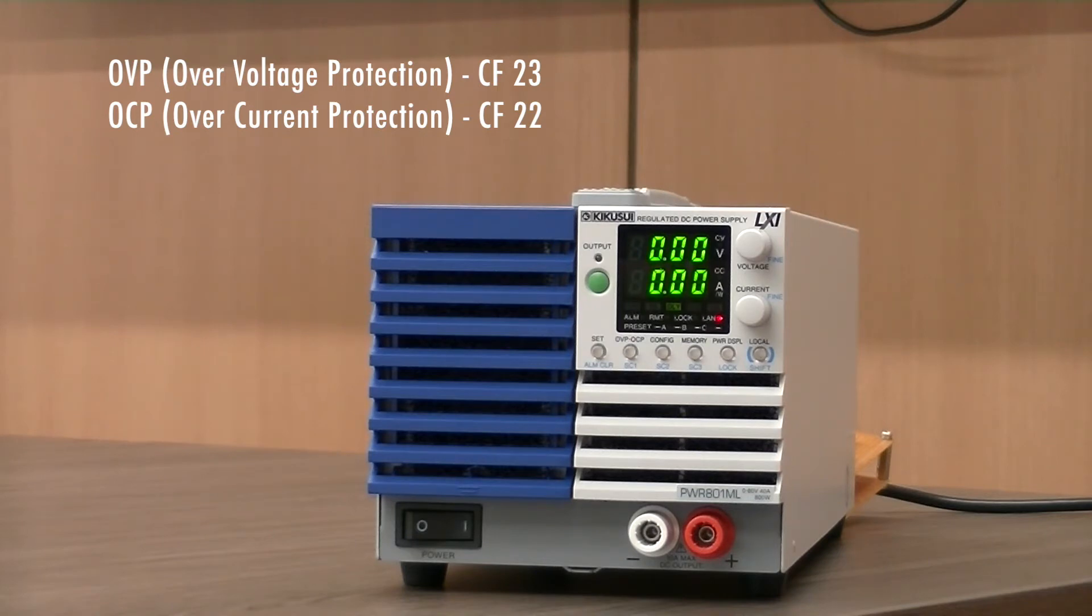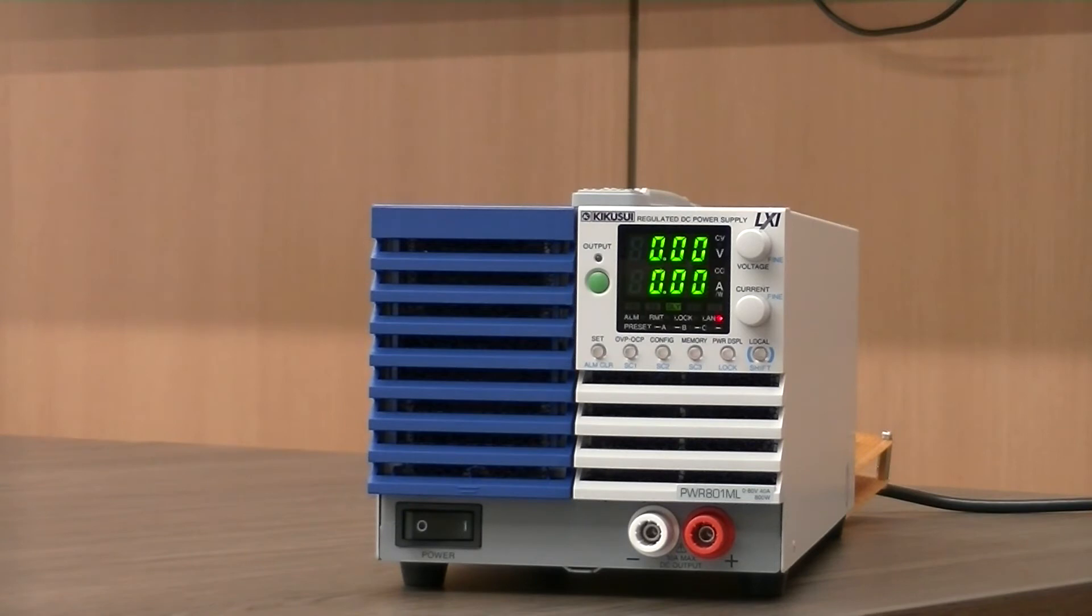Anytime the output terminal voltage or current exceeds your desired trip point, the OVP or OCP protection function is activated and output is prevented. Another standard protection that is included on the PWR01 is OHP or overheat protection.